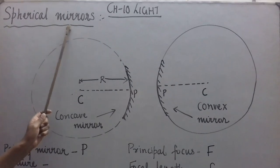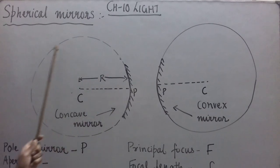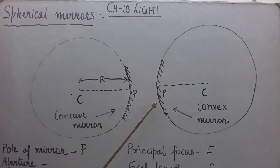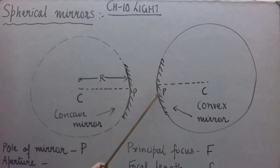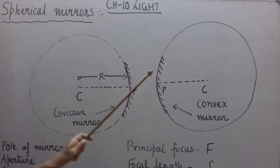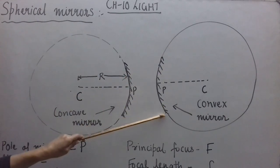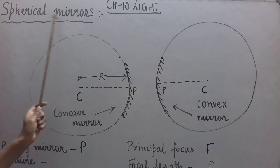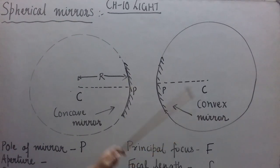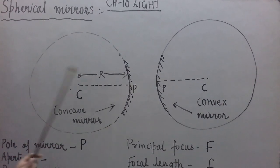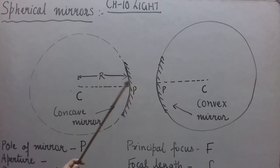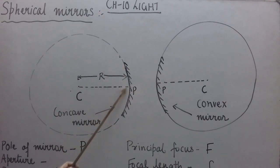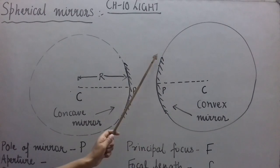Spherical mirrors are mirrors which are formed out of hollow glass spheres by cutting a part and polishing it on one of the two sides. If polishing is done on the inner side, it acts like a convex mirror. So there are two types of spherical mirrors: concave mirror, whose reflecting surface is curved inwards, and convex mirror, whose reflecting surface is curved outwards.